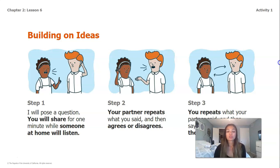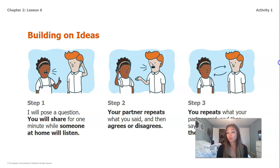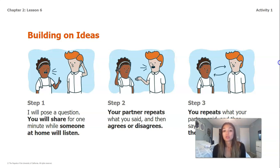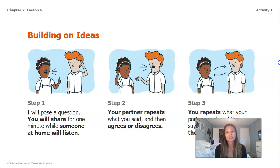There are three different steps to this process. Step one: I'm going to ask you a question and you are going to share for one minute while someone at home listens to you — that can be another adult at home, an older sibling, anybody that you can talk to. Step two: your partner is going to repeat what you said and then agree or disagree with your point. And the very last step: you are going to repeat what your partner said and then say if that has changed your mind or not.